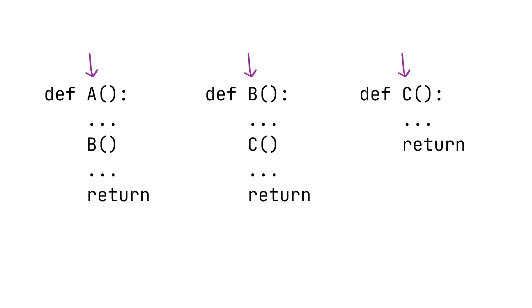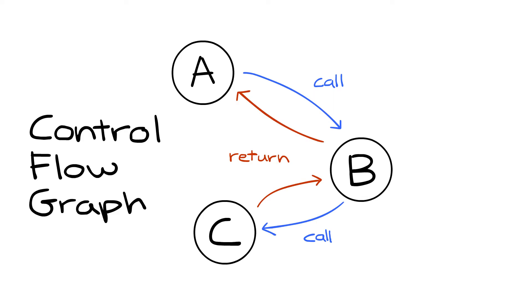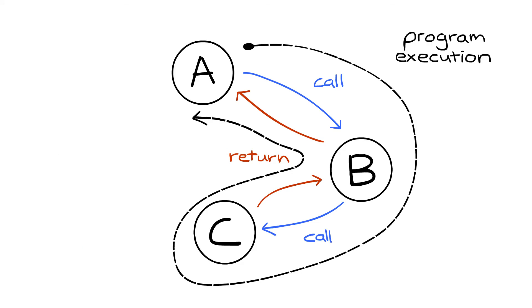A program is composed of functions which can call and return to each other. If we graph all the functions that call and return to one another, we get what's called a control flow graph. It's called a control flow graph because it tells us the possible ways that program execution, aka control, will flow.